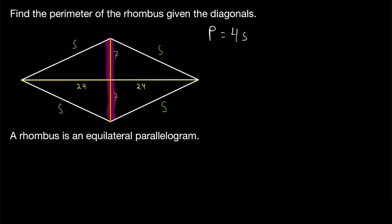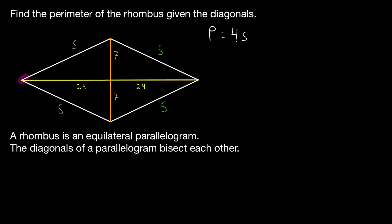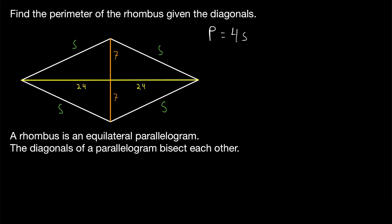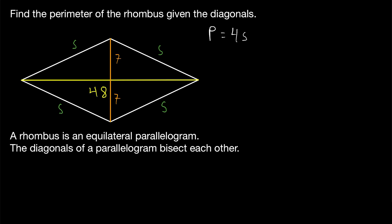But how can we use the diagonals of the parallelogram to calculate the side length? Since a rhombus is by definition a parallelogram, its diagonals bisect each other — they basically cut each other in half. For example, if the orange diagonal had a length of 14, we could conclude that these two pieces each have a length of 7. Similarly, if the yellow diagonal had a length of 48, since diagonals bisect each other in a parallelogram like a rhombus, each of those pieces would be 24.